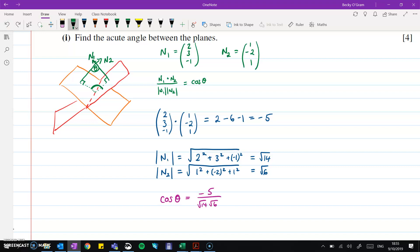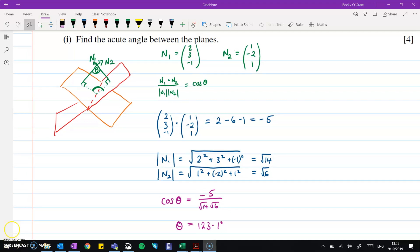And we'll get that cos theta equals minus 5, so the scalar product, divided by the product of the moduli to give us this number here. And then theta is going to be, if we do inverse cos on that, we'll get 123.1 degrees.